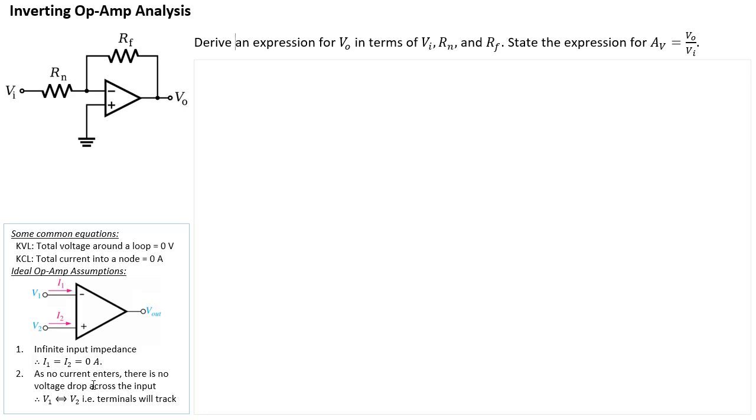The second assumption is that because there are no currents going in, you're going to have zero volt voltage drop across the internal impedance. So that means V1 will be equal to V2. So the idea is that if you put whatever voltage you put on V1, V2 will follow, or whatever voltage you put on V2, V1 will follow. So those are our two assumptions.